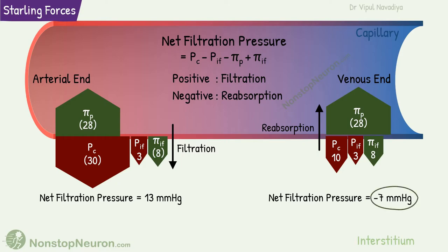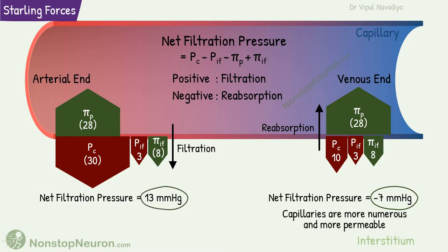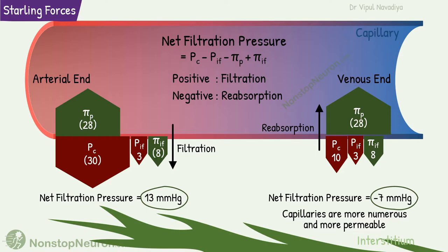The reabsorption pressure at the venous end is considerably less than the filtration pressure at the arterial end. However, at the venous end, capillaries are more numerous and more permeable. So even this lower pressure is sufficient for reabsorption of most of the filtered fluid. Some fluid and proteins that are left are taken up by lymphatics to eventually return to the blood.